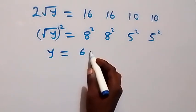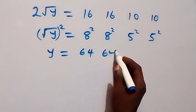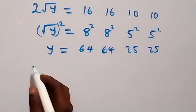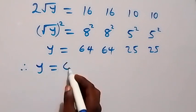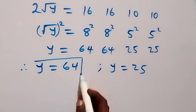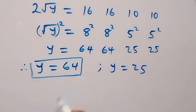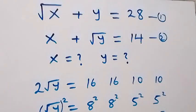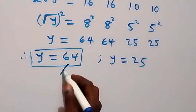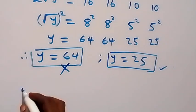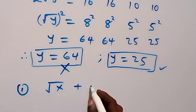To remove the square roots we square both sides, so y equals: 64, 64, 25, 25. This implies we have two possible values for y: y = 64 or y = 25. However, y cannot be 64 because from equations 1 and 2, y plus something does not even reach 64. So y cannot be 64, and we go for y = 25.